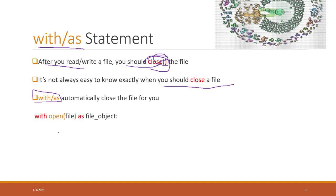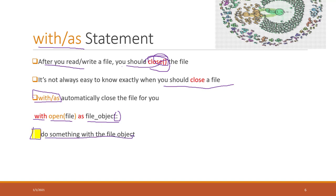The syntax for the with-as statement is: write 'with', then open the file, use 'as' to give the file object a name, followed by a colon. Within the indented block after that statement, you can do things with the file object. Everything done within the with-as block is guaranteed to close the file after you are done, saving memory and resources.